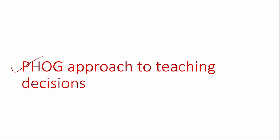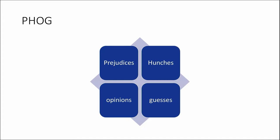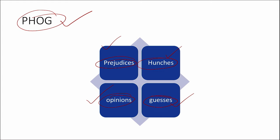What is the PHOG approach of teaching decisions? This is the old traditional decision-making model by teachers — where most of the time teachers take decisions from Prejudices, Hunches, Opinions and Guesses. Prejudices means previous judgments; hunches means based on their experiences how it works; opinions are the personal opinions of the teachers; and guesses is the probability of what the teacher feels about how things work.